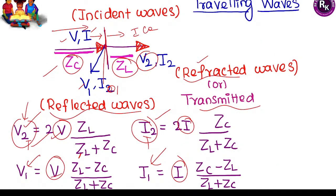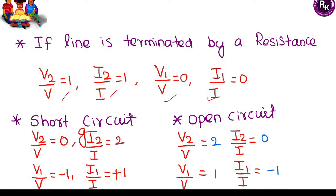Special cases for traveling waves: if the second medium has a purely resistive termination, specific coefficient formulas apply. If the second medium is short-circuited, specific conditions result; if open-circuited, other conditions apply. These cases are written and are frequently asked in examinations. Please refer to the detailed power system lecture for complete derivation and explanation.